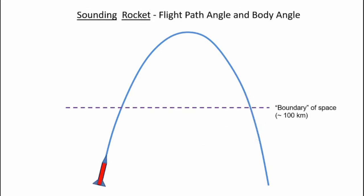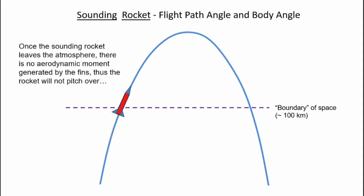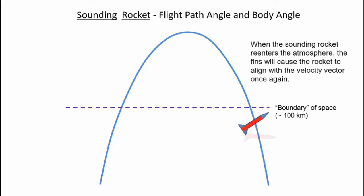If we look at a sounding rocket flight, or a rocket that flies outside the atmosphere for most of the flight, it's not quite the same. The velocity vector will be aligned to the body angle while it's flying through the atmosphere, just like in the model rocket. Once the rocket leaves the atmosphere, there are no longer any aerodynamic forces that make the rocket align the body to the velocity vector. So the rocket will maintain a constant body elevation, and that does not equal the velocity vector. However, when the rocket hits the atmosphere, provided it still has its fins, it will ultimately realign the body elevation to the velocity vector.